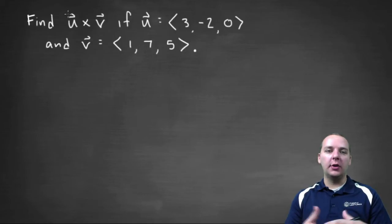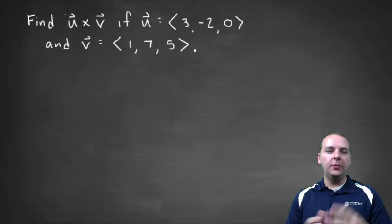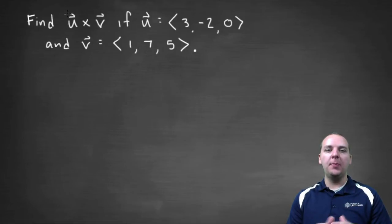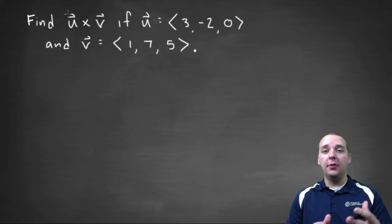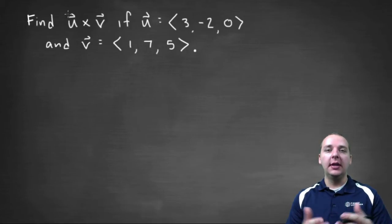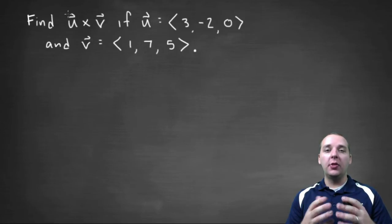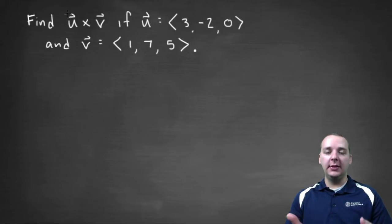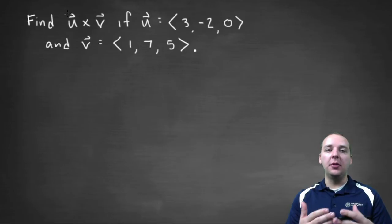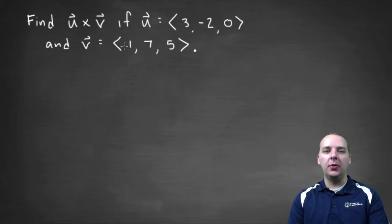Here we're being asked to take the cross product of two vectors u and v, where vector u is the vector (3, -2, 0) and v is the vector (1, 7, 5). Basically what a cross product does is it will take these two vectors and find a third vector that's orthogonal to both of them at the same time, which means it meets both of them at a 90 degree angle.